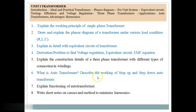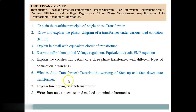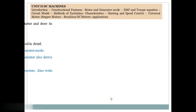Question 6: What is an autotransformer? Describe the working of step-up and step-down autotransformer. Question 7: Explain the functioning of an autotransformer — note that questions 6 and 7 are essentially the same. Question 8: Write short notes on causes and methods to minimize harmonics. These are the important questions from Unit 1.